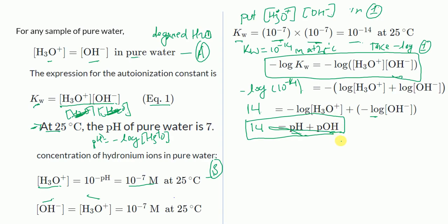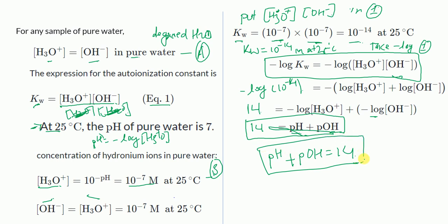So our equation is pH + pOH = 14. This is the relationship between pH and pOH, and this is how we derive it. We will now solve some problems related to this equation.